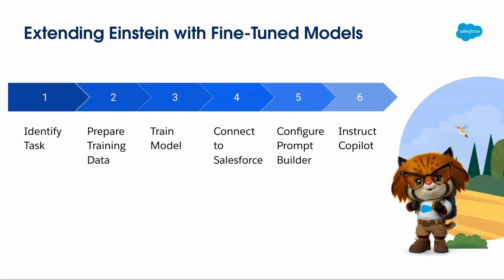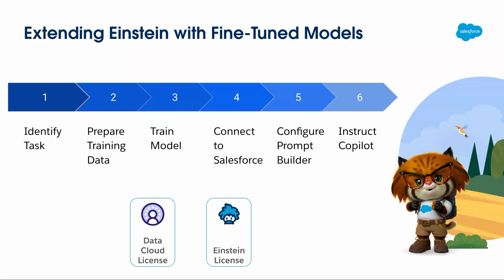If you're going to create a fine-tuned model and get it into Salesforce, these are the steps: first, decide what you're trying to do; then get training data; then train your model; then connect to Salesforce — that's the bring-your-own-model step; then configure Prompt Builder to use that model; and then configure Copilot instructions to trigger it. You'll need a Data Cloud license, because bring your own model is part of AgentForce Studio, and you'll also need an AgentForce license.